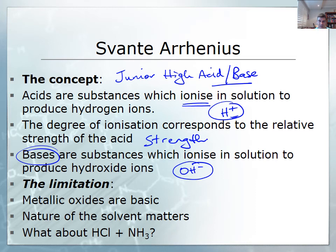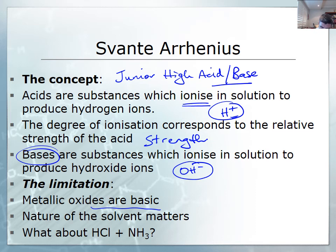Problems with the Arrhenius definition include the fact that metallic oxides are basic, yet the nature of the solvent matters. While these substances dissolved in water produce hydrogen ions and hydroxide ions, if they're dissolved in another solvent they don't necessarily behave in the same way. There's also the question of what happens with the reaction between HCl and NH₃.